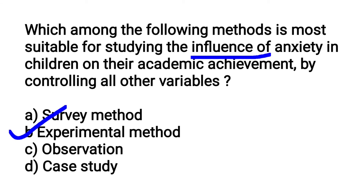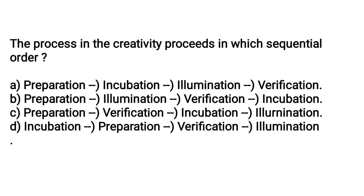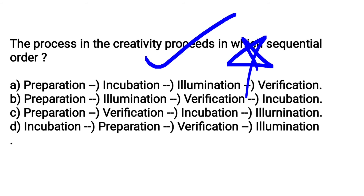The process in creativity proceeds in which sequential order? The correct order is: preparation, incubation, illumination, verification. If you study the correct order, you can answer exam questions on creativity. The answer is preparation, incubation, illumination, verification.